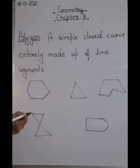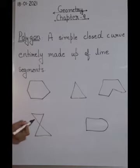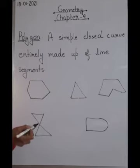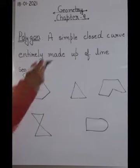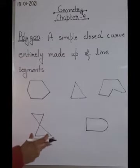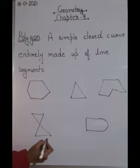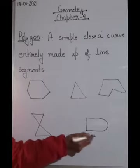Now come to this one. Though it is a closed curve as it has the same starting and ending point, it is not simple - because the lines of the curve are crossing and cutting themselves. Since it is not a simple closed curve, it cannot be a polygon. This is not a polygon.